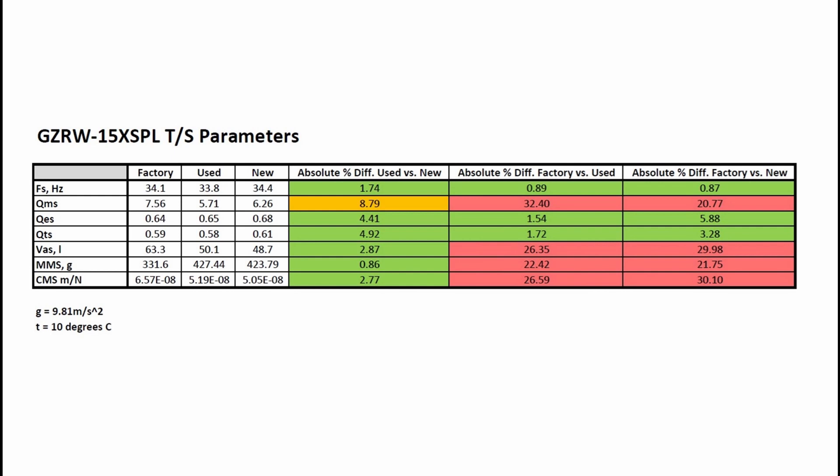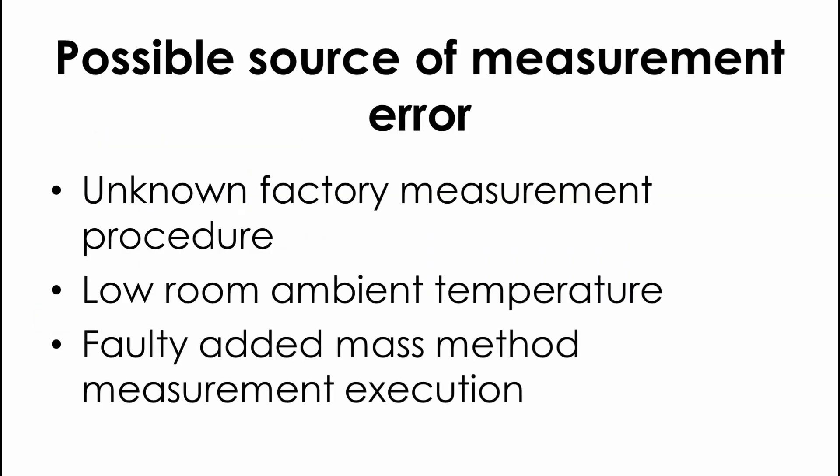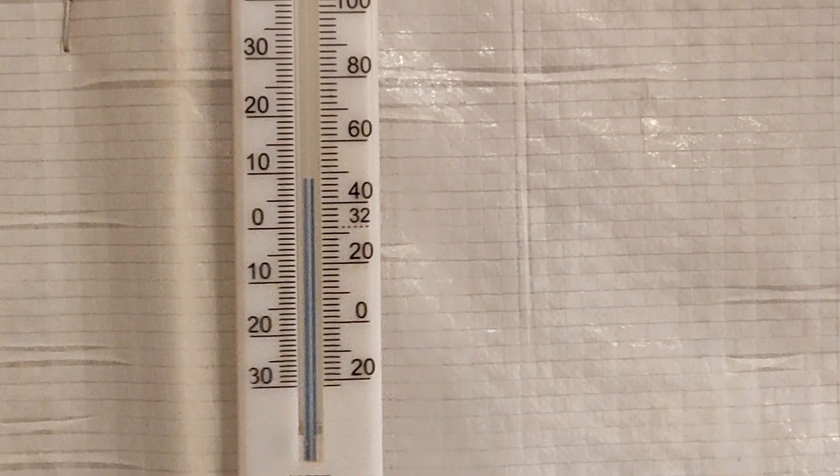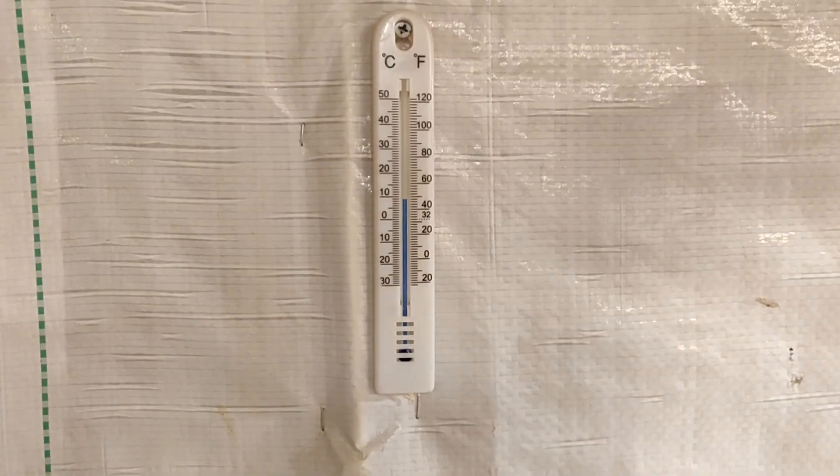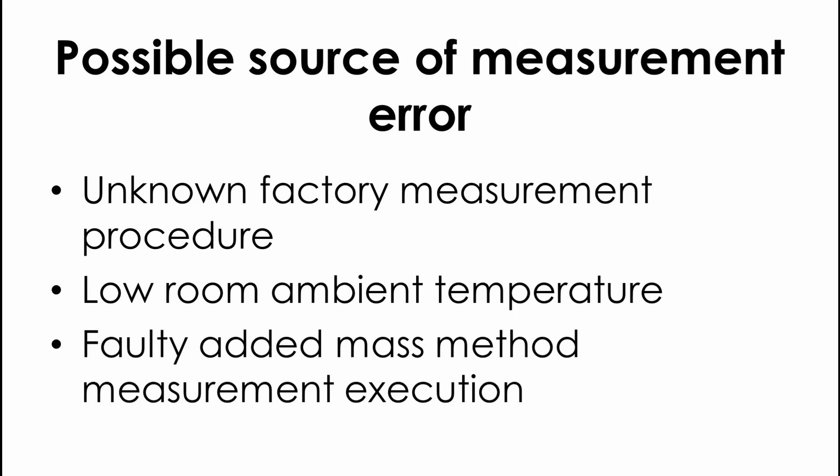The FS and QTS values match up quite well, which gives me some confidence in the measurement procedure. There are three main factors that can affect the results and introduce errors. I do not know the measurement procedure of the manufacturer, and different driver placement or setup factors could introduce variables I did not account for. Also, the room temperature during measurements was only 10 degrees Celsius, which can stiffen the surrounds and spiders causing higher compliance and tighter suspension. Lastly, the added mass method to find equivalent air compliance could be executed with some errors, and it can be cross-checked using the known-volume method.